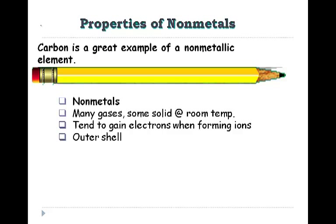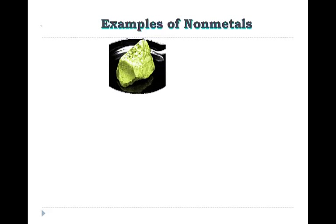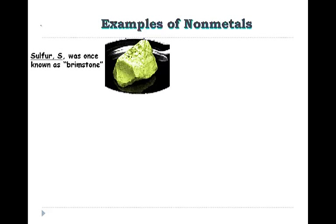They're going to tend to gain electrons when forming ions, and again we'll talk about ions a little bit later. And these elements tend to have five or more electrons in their outer shell or valence shell.